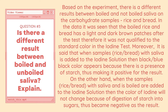For question number 3: is there a different result between boiled and unboiled saliva? Based on the experiment, there is a difference — the boiled rice and bread showed light and dark brown patches after the test, not qualifying to the standard color in the iodine test. When rice or bread with unboiled saliva is added to iodine solution, a black or blue-black color appears indicating starch presence, giving a positive result. When saliva is boiled, the starch is digested into sugars and the iodine color does not change, giving a negative result.